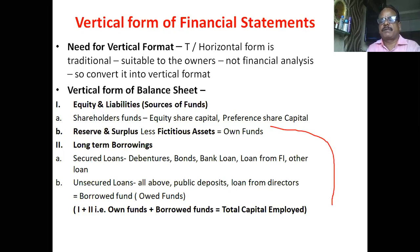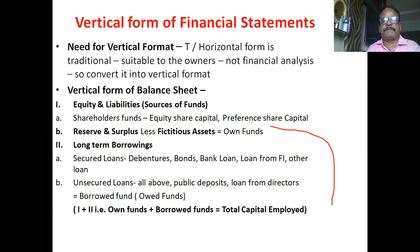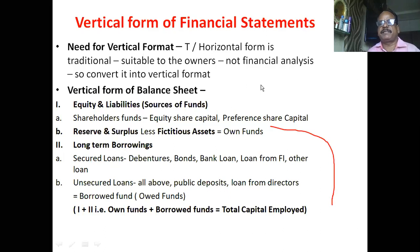The vertical form of balance sheet has three columns: the first column is particulars, another column is inner amount, and the third column is outer amount. It is like a particular statement or table with three columns. The vertical form of balance sheet is started from the liability side.